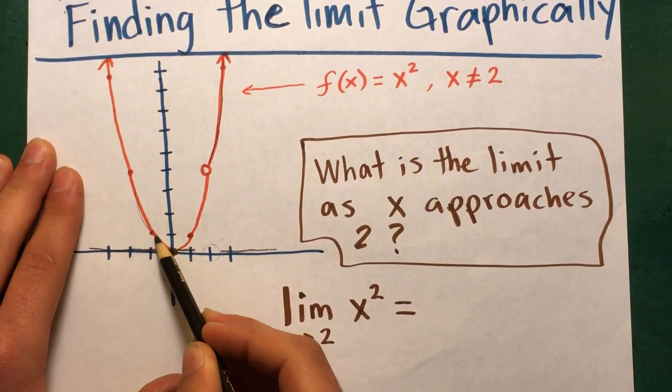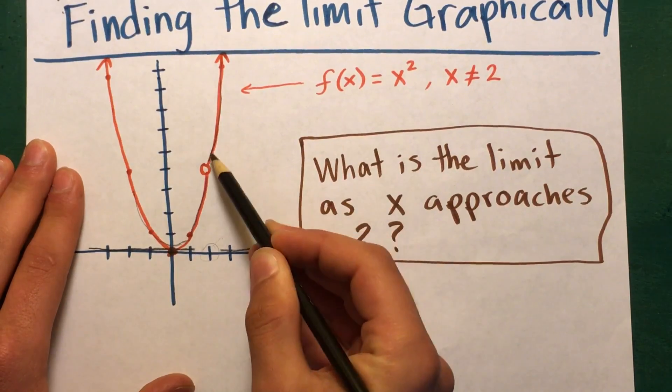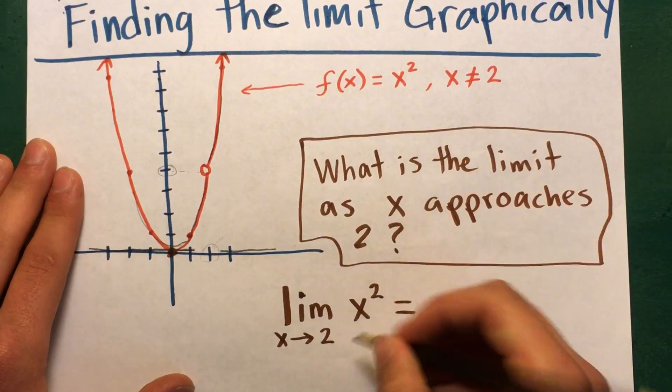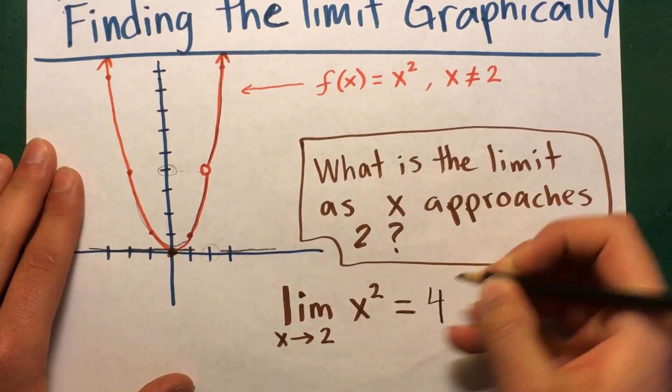The function is going like that and it's approaching this number. What is this number that it's approaching? It's approaching 4. That means the limit of x² as x approaches 2 is 4.